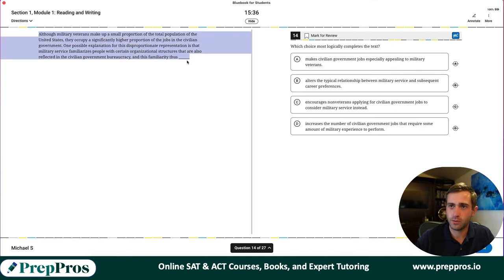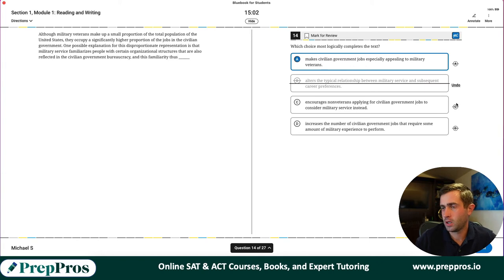Logically completes the text. So basically a reading comprehension question. Although military veterans make up a small proportion, they occupy a significantly higher proportion of the jobs. One possible explanation is that in the familiarity. So we're basically saying military veterans make a small proportion of the total population, but they take up a ton of the jobs in civilian government. And so here we're talking about they're being familiarized with it. So it has to be A here.